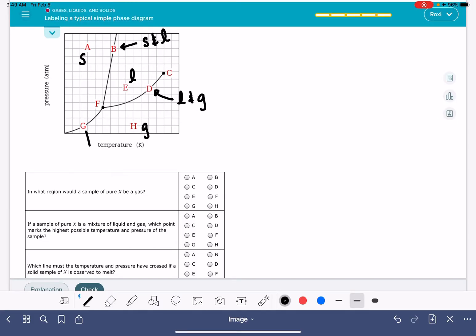Points that fall along line G are the points where it coexists as a solid and a gas, so subliming or depositing.